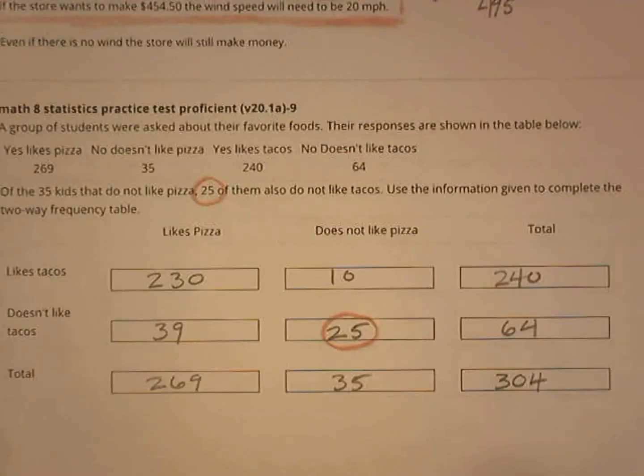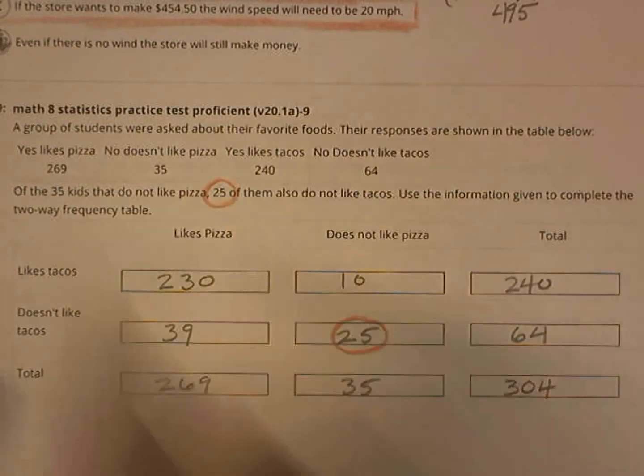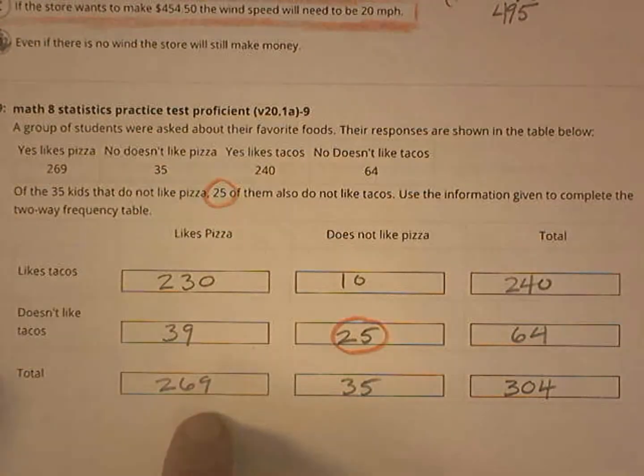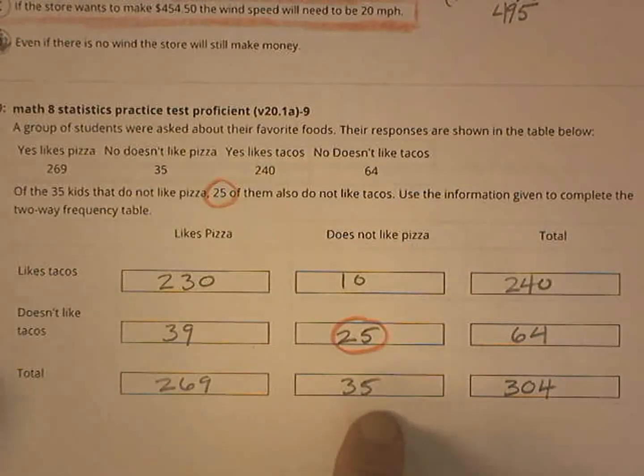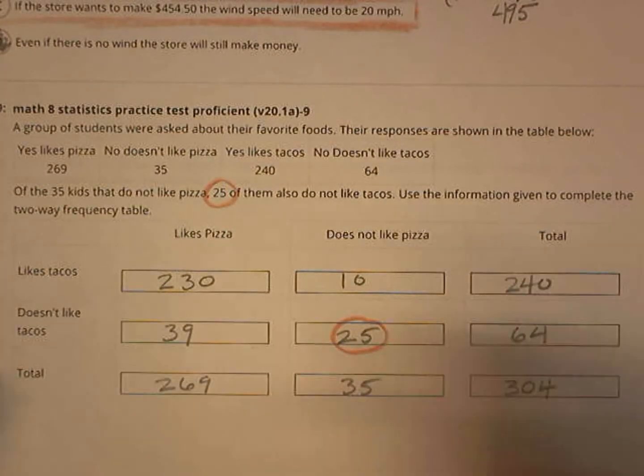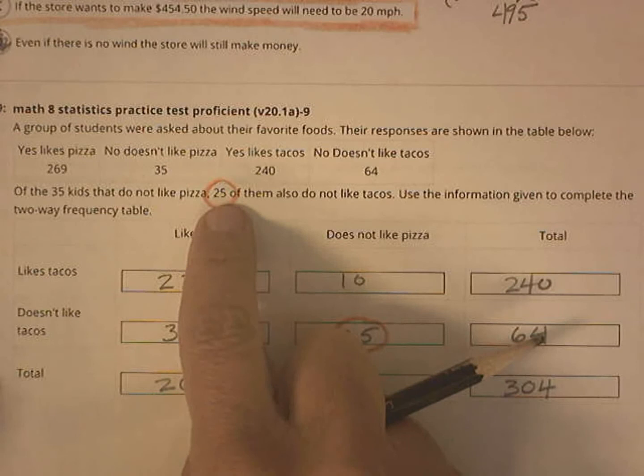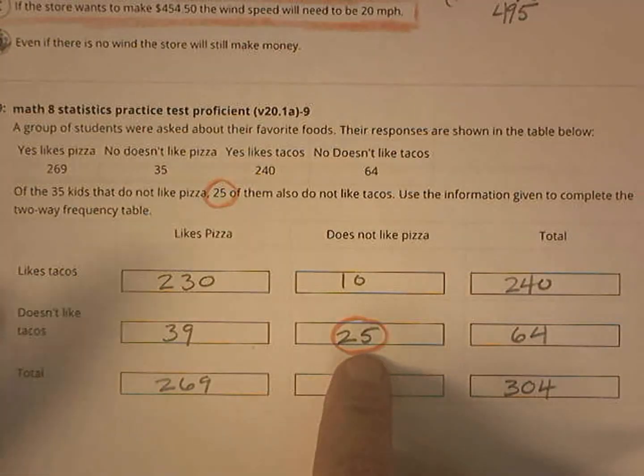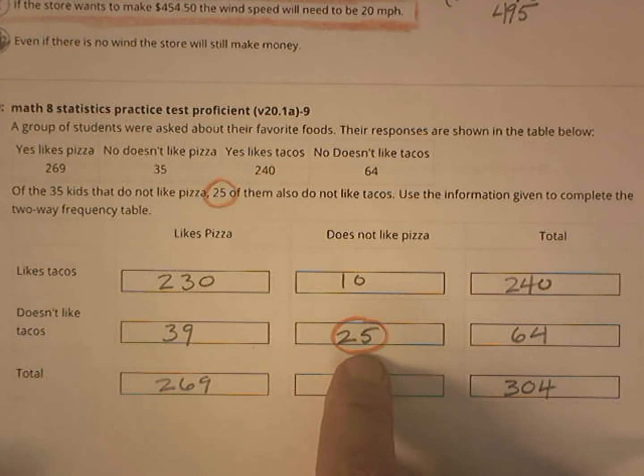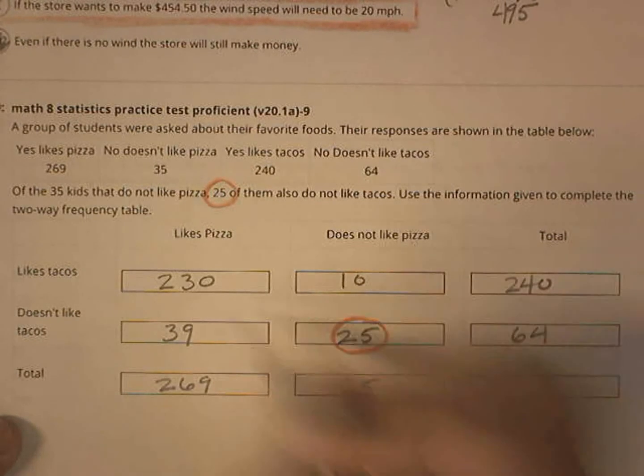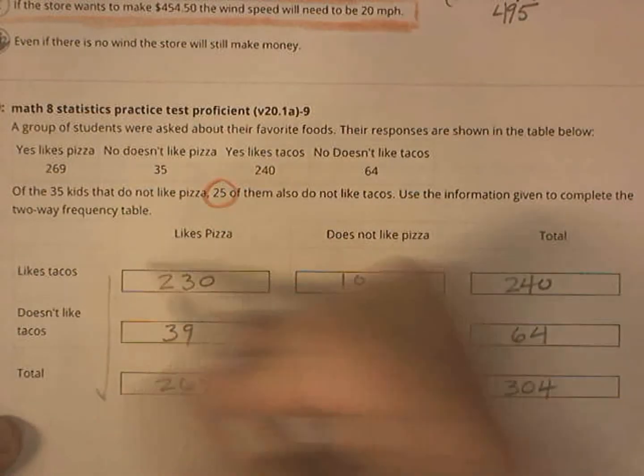So when we're going to fill out this frequency table, 269 kids like pizza, 35 don't like pizza, 240 like tacos, 64 don't like tacos. The bonus thing is that 25 kids don't like tacos and don't like pizza. I don't know who those kids are. And then I fill the rest of it in by adding down and adding across.